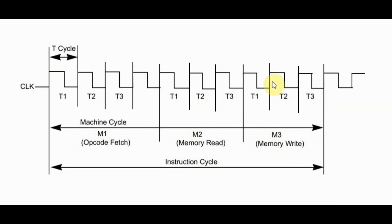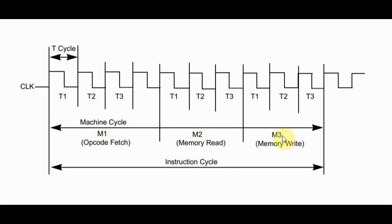This is the timing diagram of an instruction cycle for a memory read or write instruction. The instruction cycle is split into three machine cycles: M1, which is the opcode fetch; M2, which is the memory read; and M3, which is the memory write.